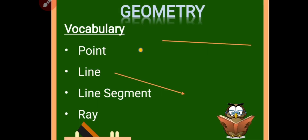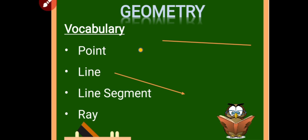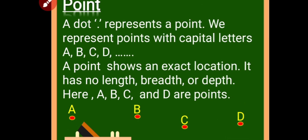Today in this topic we will learn about point, line, line segment, and ray. So let us proceed. What is a point? A point is a dot — we can say that a dot represents a point. A simple dot represents a point.